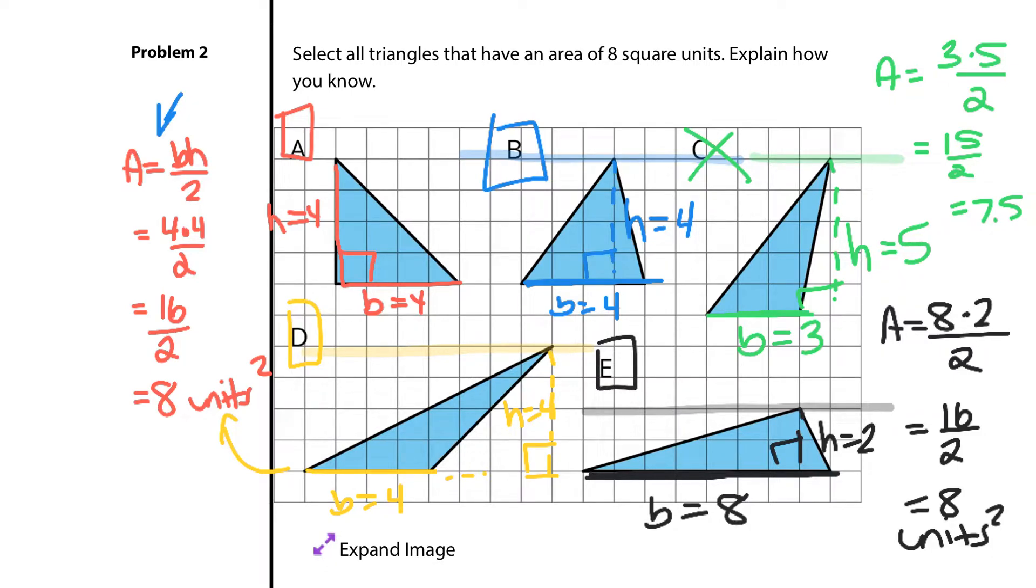So E is the solution as well. So all the triangles that have an area of 8 square units have A, B, D, and E.